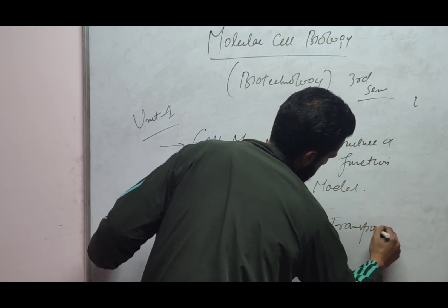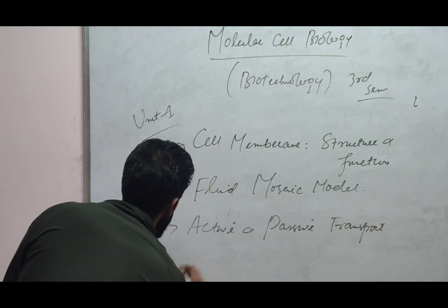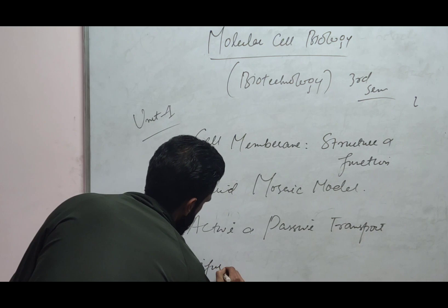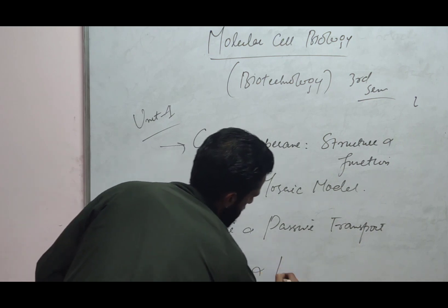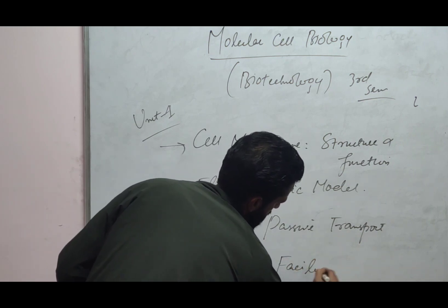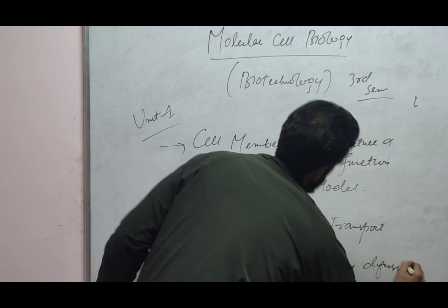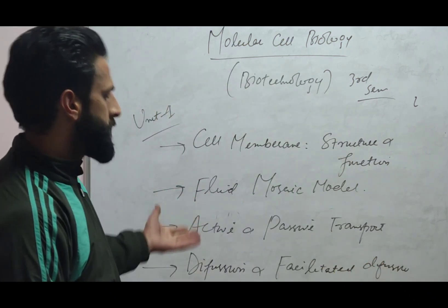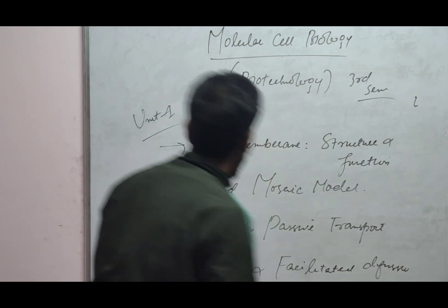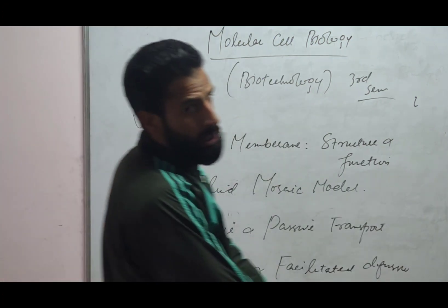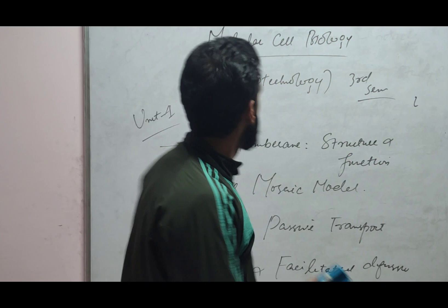And last question in this unit will be diffusion and facilitated diffusion. Diffusion and facilitated diffusion. So first unit we have cell membrane structure and functions, fluid mosaic model, active and passive transport, diffusion and facilitated diffusion.